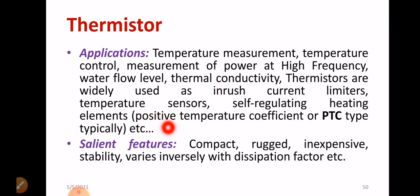What are the salient features of thermistors? First one is it is compact, obviously. The construction is rigid and rugged. It is cheap, inexpensive. Regarding stability, it shows better stability at even higher and lower temperature. It varies inversely with respect to dissipation factor. These are the salient features of thermistors.